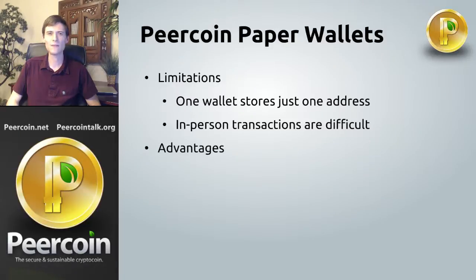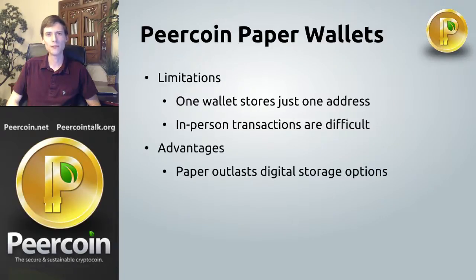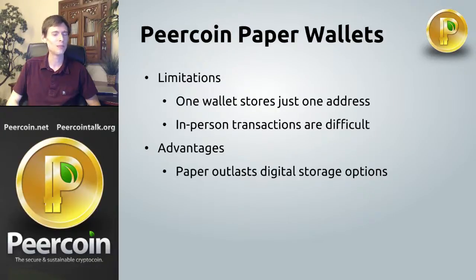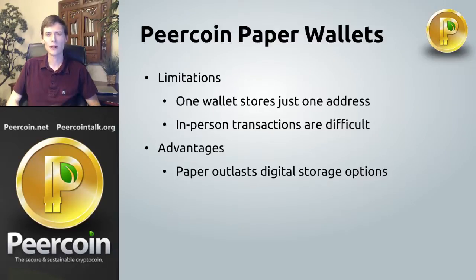Now let's look at some of the advantages of paper wallets. First, paper lasts a long time — maybe a couple hundred years. It will turn yellow and start to curl up but you could still read the QR code or the private key off a PureCoin paper wallet for a very long time. Compare that to a hard drive which lasts maybe 20-30 years, or a CD which wears out in 10 to 20 years.